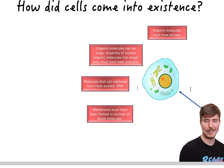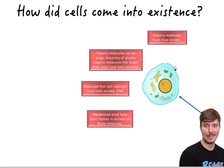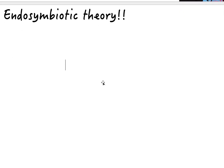Now, I was talking about very simple cells. Our cells are much more complicated — they have many organelles. How did these complicated cells start forming? There's a theory called the endosymbiotic theory. 'Symbiotic' means to work together, so let's see how this applies.